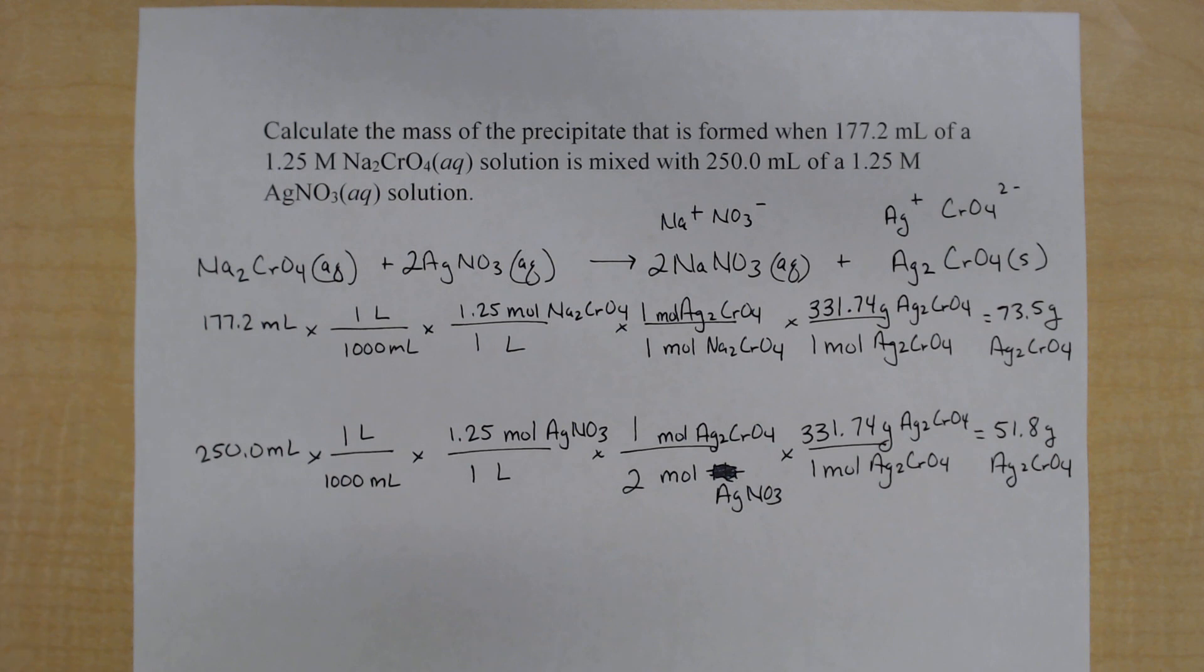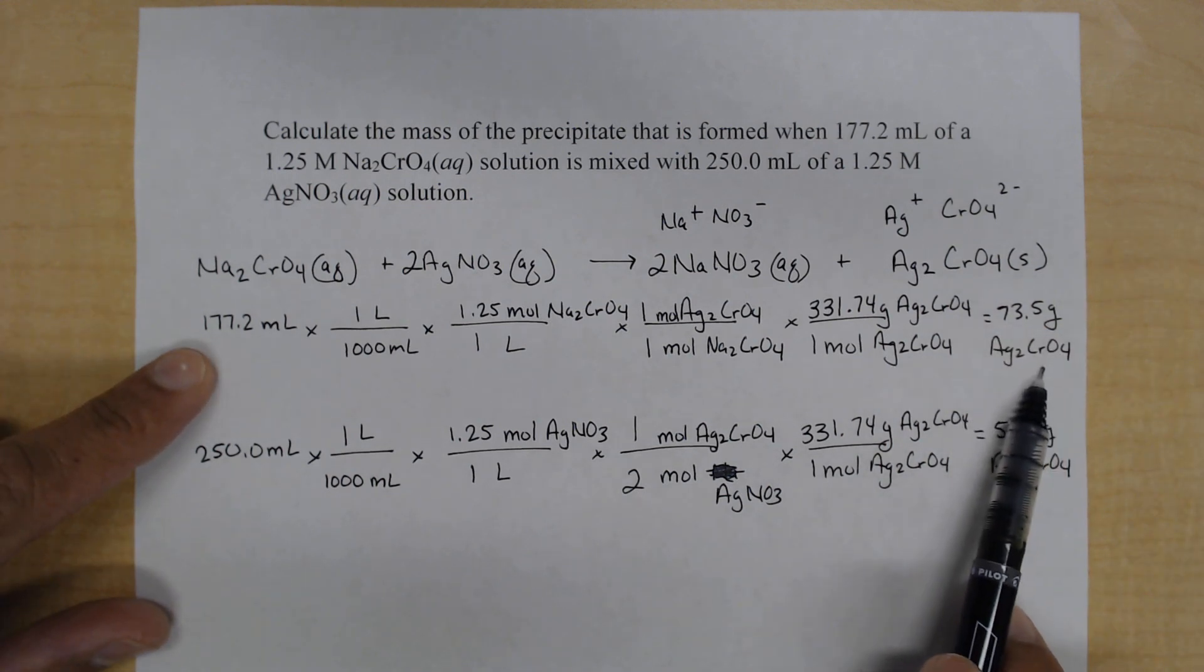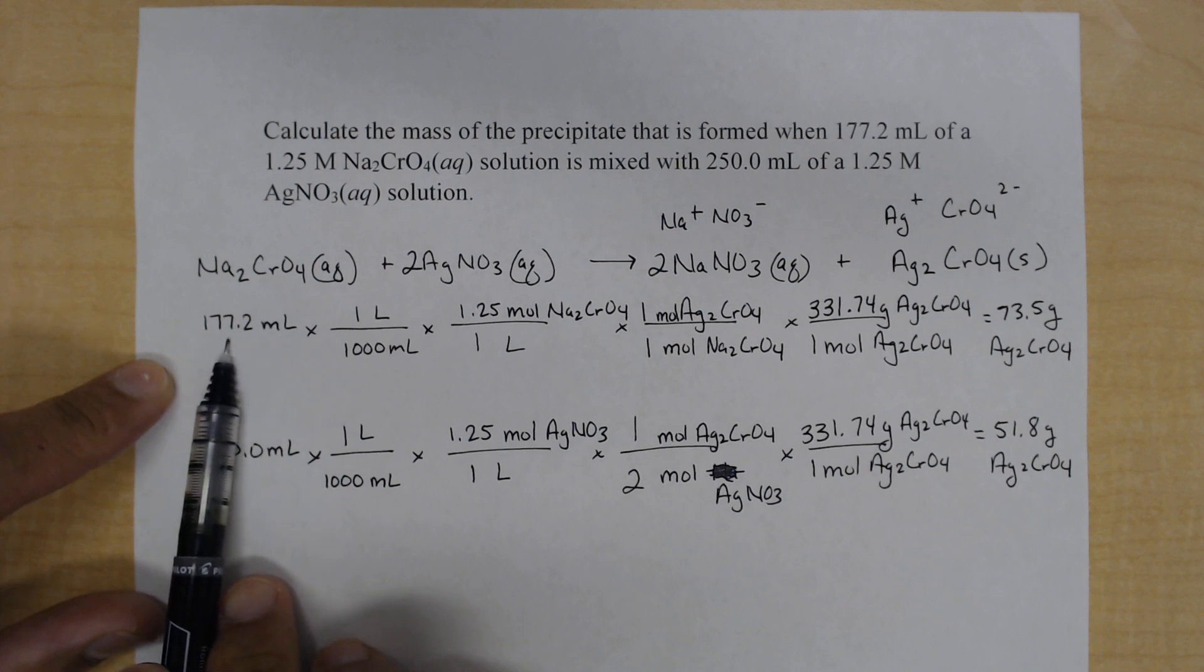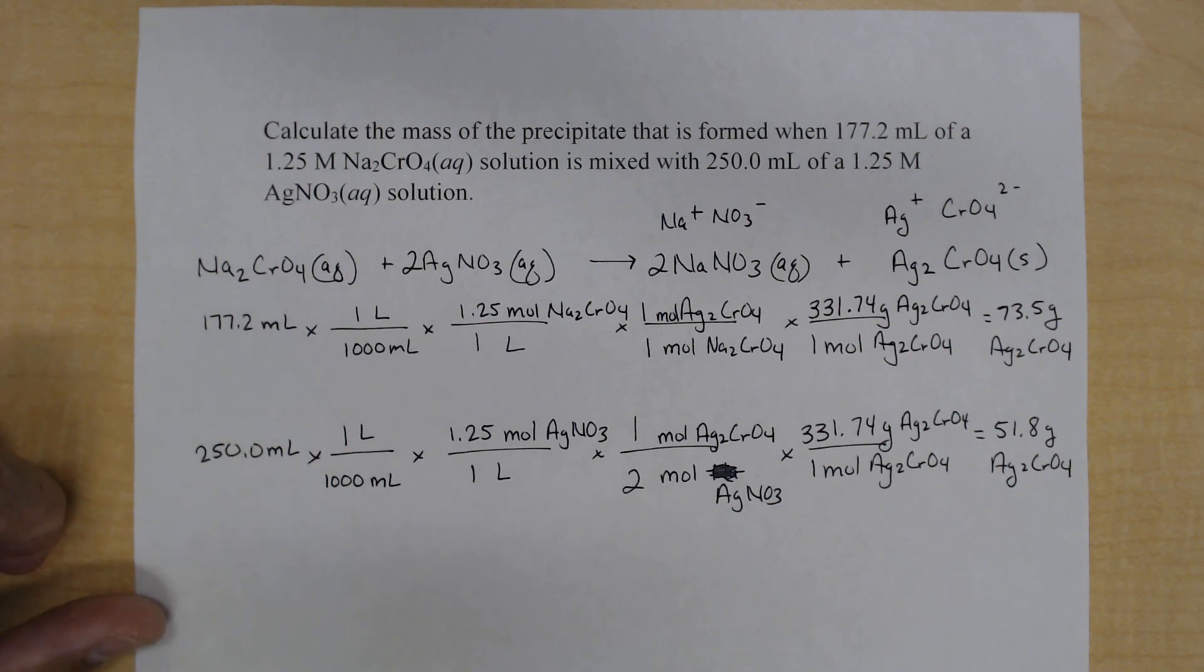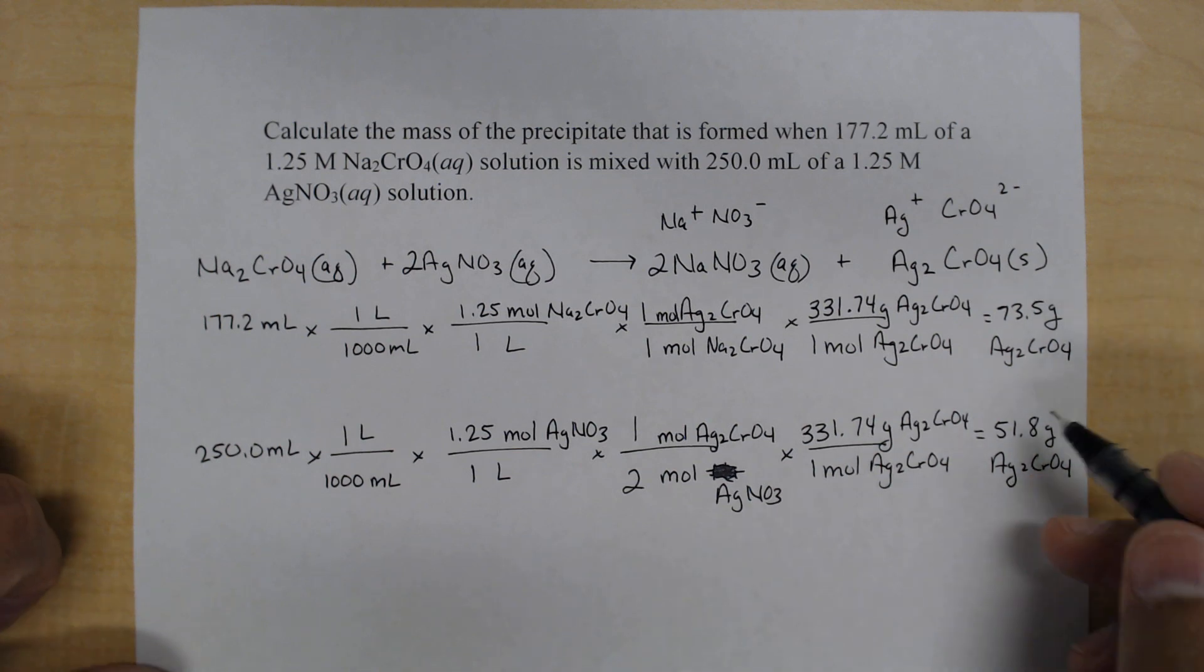And so what does it mean? 73.5 grams of silver chromate can be produced from 177.2 milliliters of the sodium chromate solution if this was the limiting reactant. If the silver nitrate is limiting reactant, 250 milliliters could produce 51.8 grams. Now you might be wondering, this has a larger volume. So why does it produce fewer? Well, of course, you can see in the stoichiometric ratio, it takes two moles. So even though we have a larger volume, it takes two moles to produce one mole of our solid. And so the smallest value, our smallest yield is our theoretical yield.